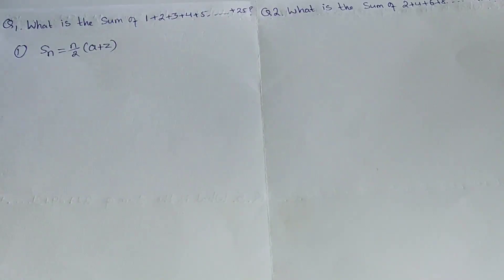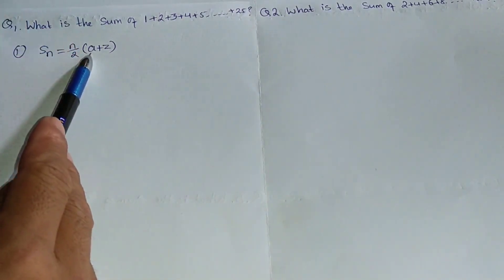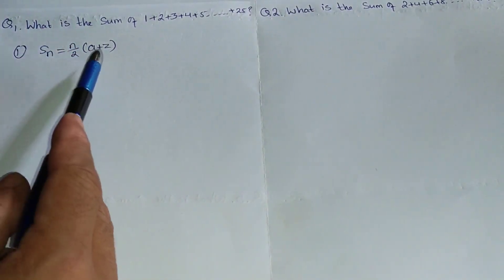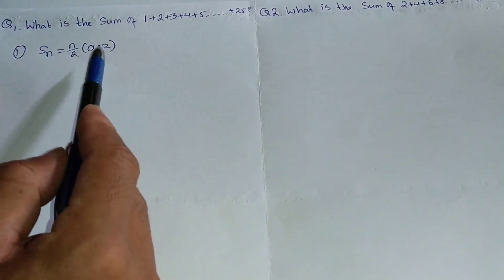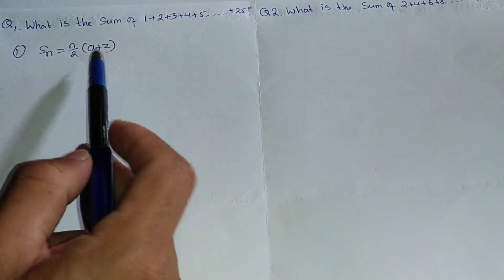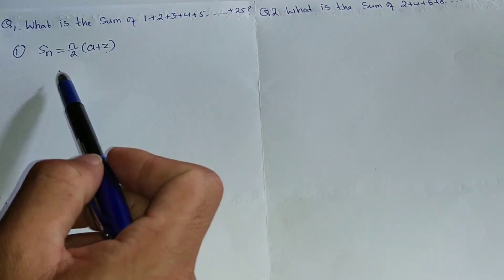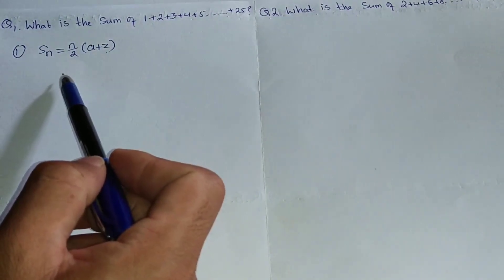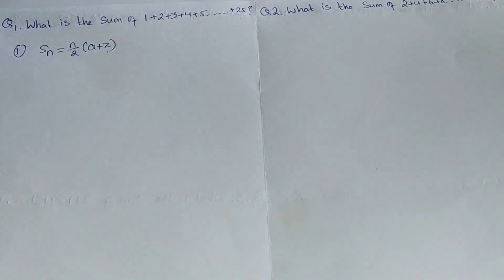N simply means the number of terms. Here, 'a' represents the first term — the starting term is 1. And 'z' represents the final term, the last term, which is 25.